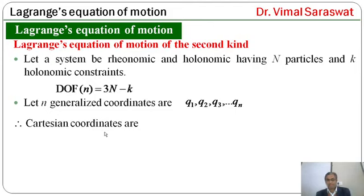The Cartesian coordinates are x1, x2, x3. Since there are n particles in this system, there will be 3n Cartesian coordinates.